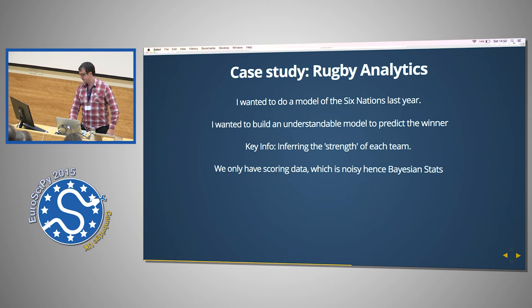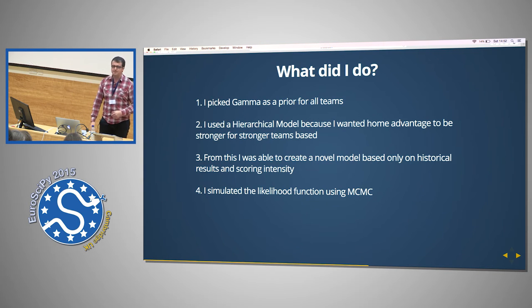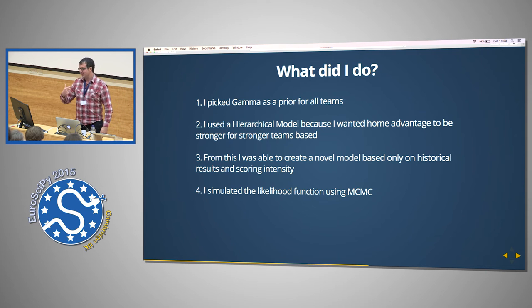So the key info in this model is that we want to infer the strength of each team. And we only have scoring data, which is noisy, hence Bayesian stats. So there's a whole paper and stuff on this. It's really interesting. Most people seem to write papers and then go to work for a gambling company and sort of drop out of the academic literature. I used a hierarchical model and if any of these come from a frequentist background, you'll know that as a fixed effect model. And I wanted home advantage to be stronger for each team. And I wanted this also to be particularly stronger for the stronger teams. So the strength of the teams was a really important thing in this. From this, I was able to create a novel model based only on historical results and scoring intensity. But don't get too excited yet. I'm going to tell you actually what happened.